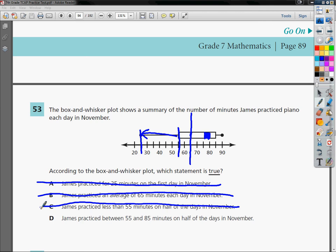And the last one, James practiced between 55 and 85 minutes on half the days in November. So that's a very logical choice. Here's 55. Here's 85. It's right where this kind of tube part is located. This would be the box. So the box does represent that middle section between the tops and the bottoms. So James practicing between 55 and 85 minutes on half the days in November makes a heck of a lot of sense because where the box is located. So the answer to number 53 is D.